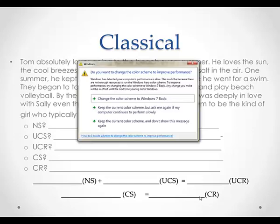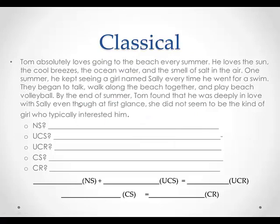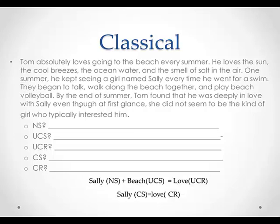Last one. Tom absolutely loves going to the beach every summer. He loves the sun, the cool breeze, the ocean air, and the smell of the salt in the water. One summer, he kept seeing a girl named Sally every time he went for a swim. They began to talk, walk along the beach together, and play beach volleyball. By the end of the summer, Tom found that he was deeply in love with Sally, even though at first glance she didn't seem to be the kind of girl who typically interested him. So here's the answer: Sally is neutral in the beginning — she means nothing to Tom. Tom naturally loves the beach, and you don't have to learn to like the beach. The sun, the smell — all of that makes you happy naturally. Sally is connected with the beach, and eventually Sally becomes connected with love. So Sally plus beach equals love, and then Sally equals love.